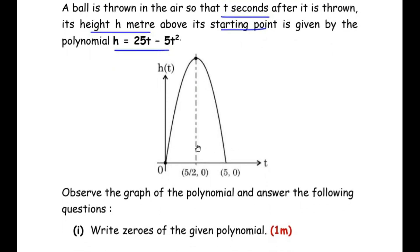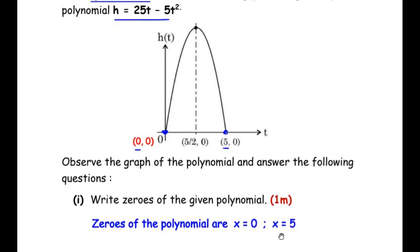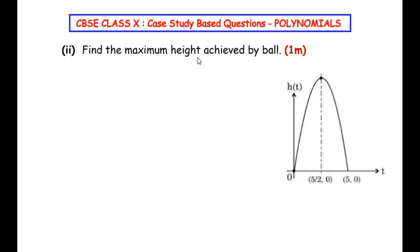The zeros, roots, or solutions of a polynomial represent the points which are on the x-axis. The curve touches the x-axis at two points: at the starting point (0, 0) and at point (5, 0). To find the zeros we consider only the x-coordinates. The x-coordinate at the starting point is 0 and the x-coordinate at the other point is 5. So the zeros of the given polynomial are x = 0 and x = 5.